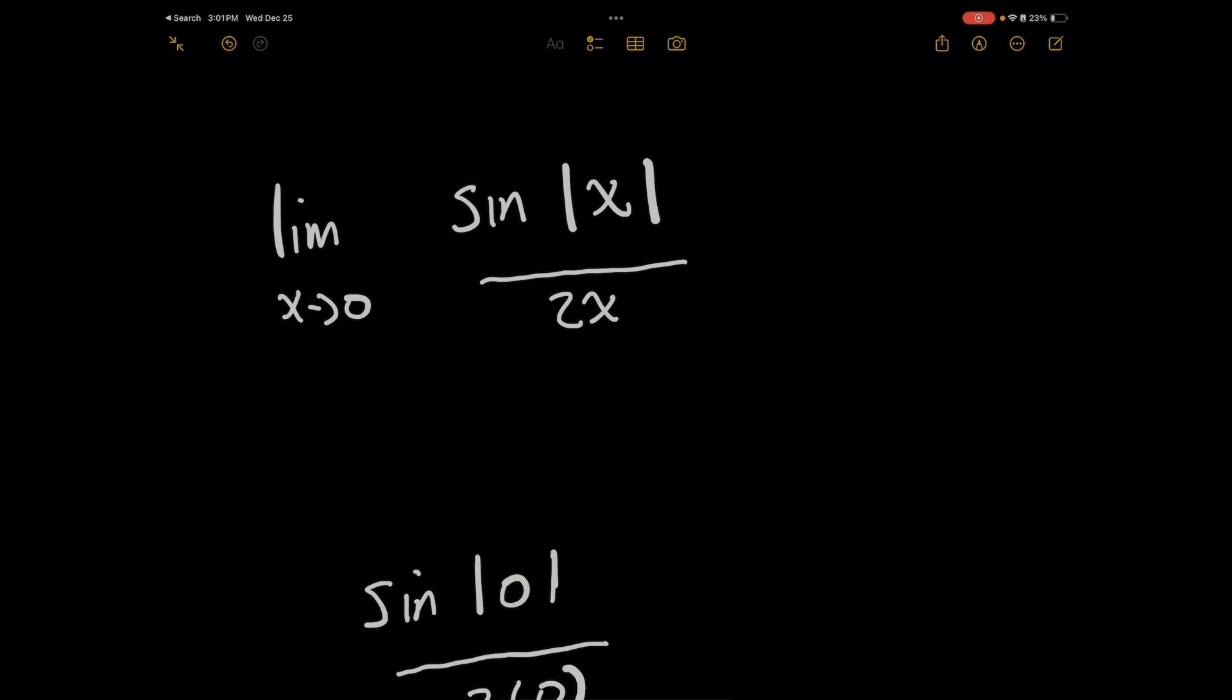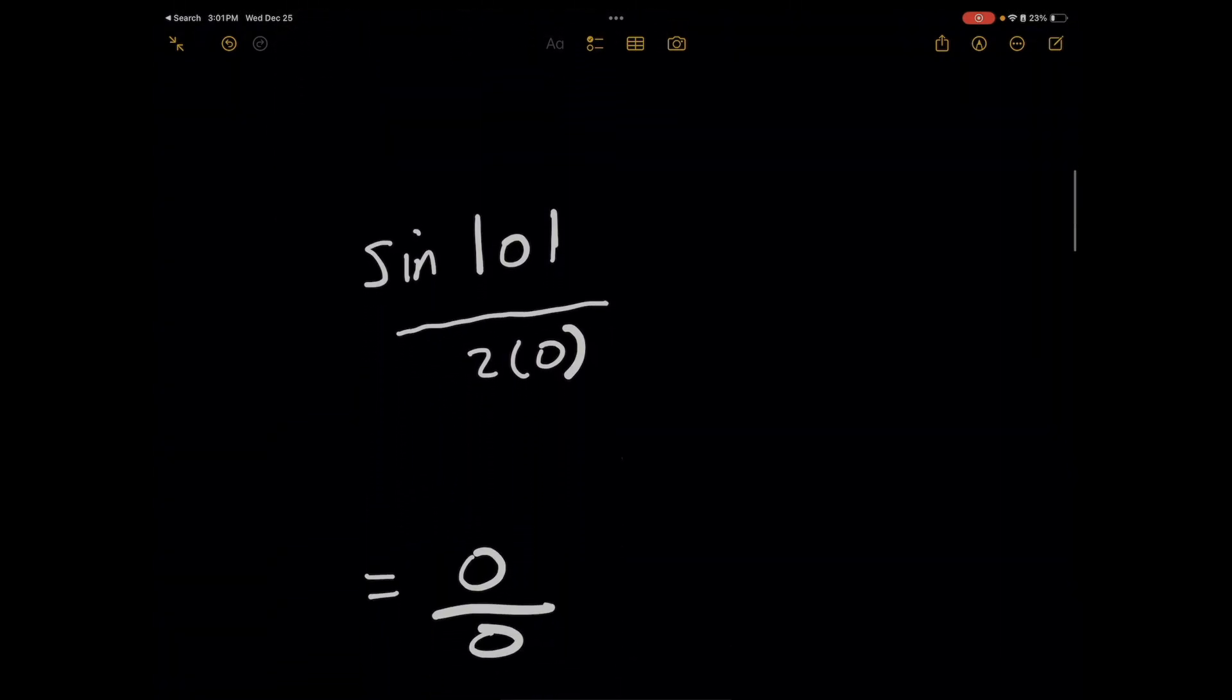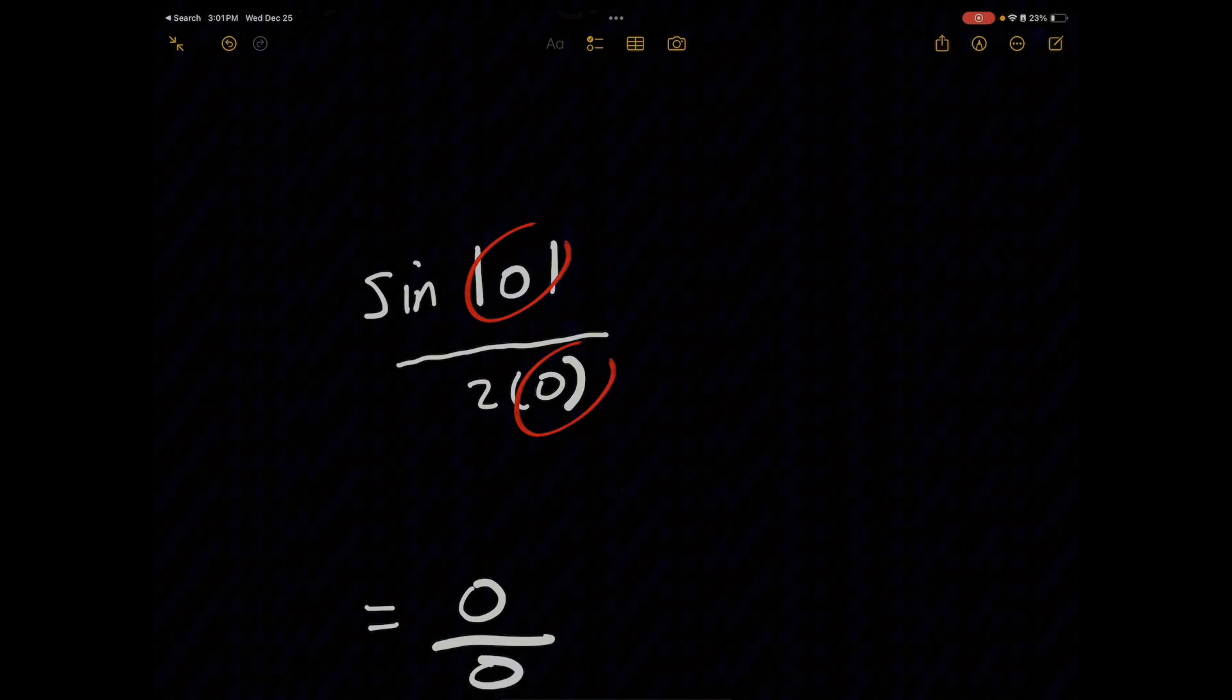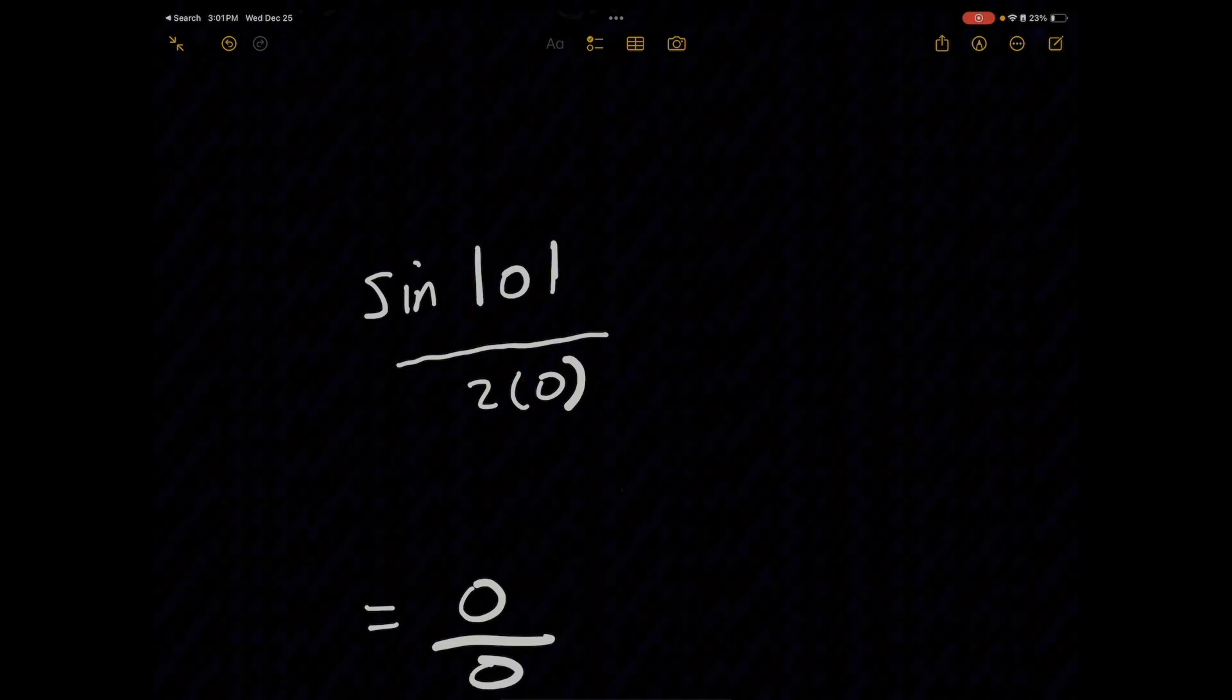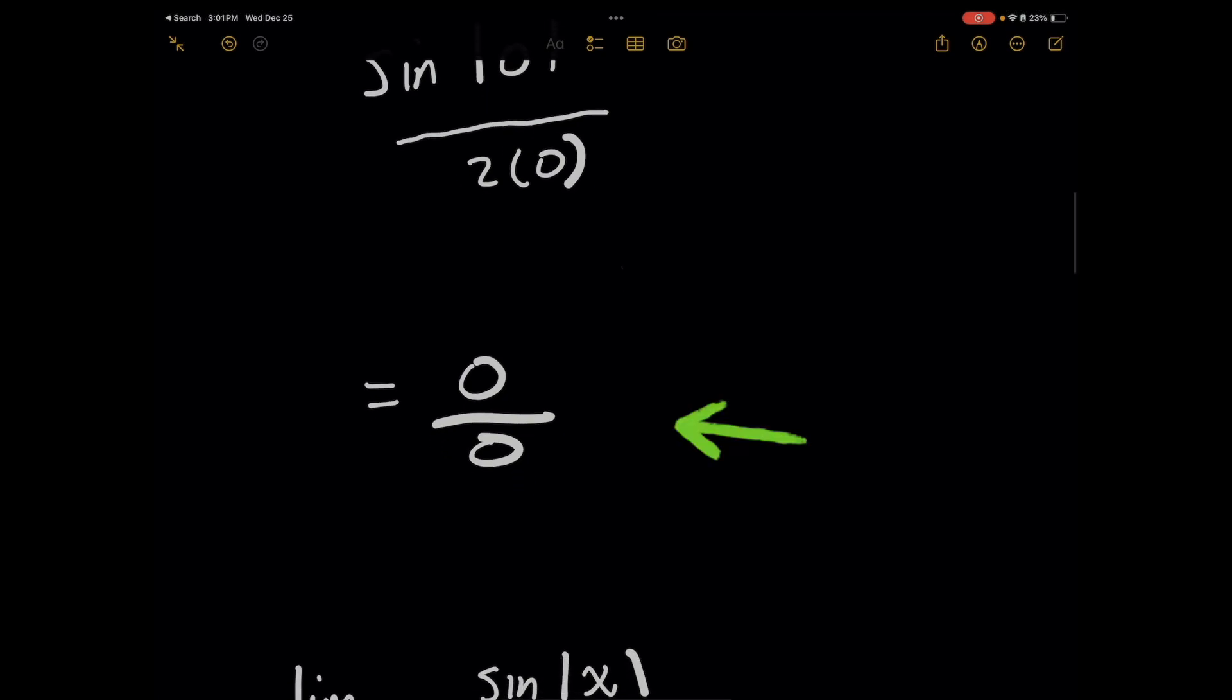The first thing I want to show you is the reason why we even talk about L'Hopital's rule here, because when you plug in zero for x, notice that sine of the absolute value of zero all over two times zero will give you one of the indeterminate forms, zero over zero, where we're allowed to use that L'Hopital's rule.